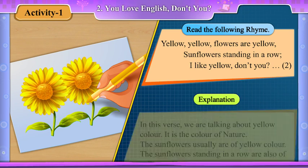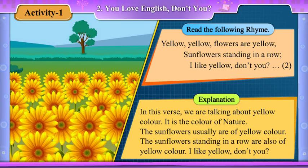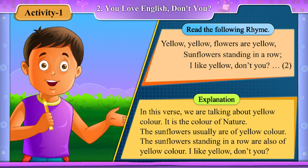Explanation. In this verse, we are talking about yellow colour. It is the colour of nature. The sunflowers usually are of yellow colour, standing in a row. I like yellow, don't you?